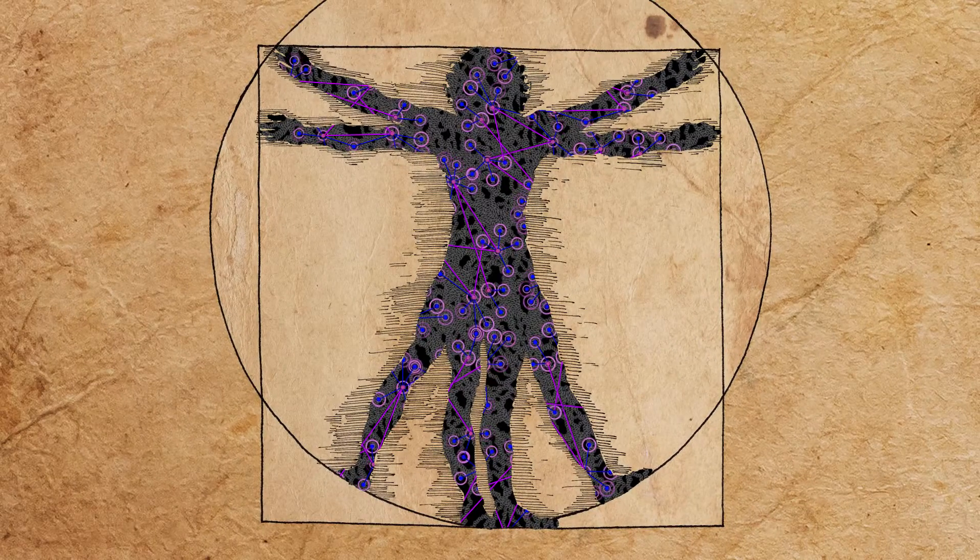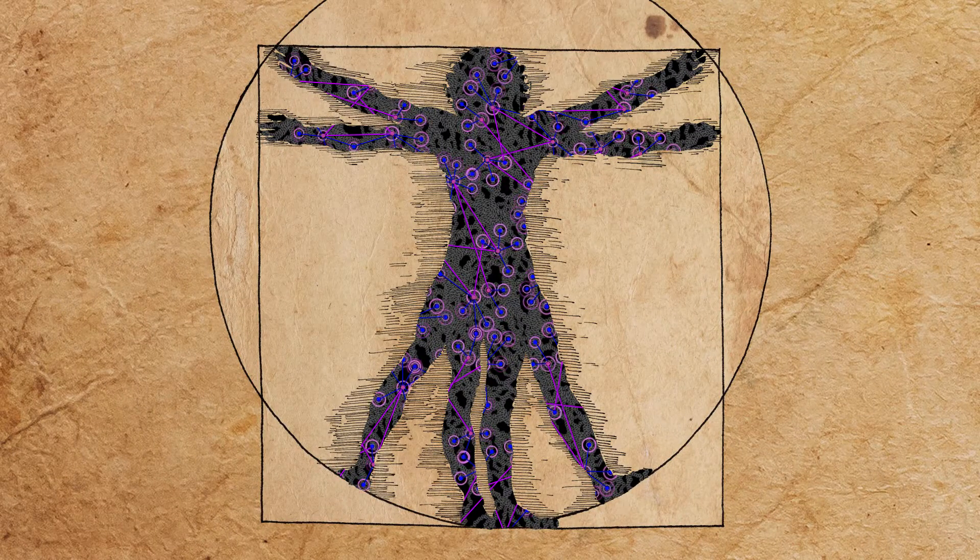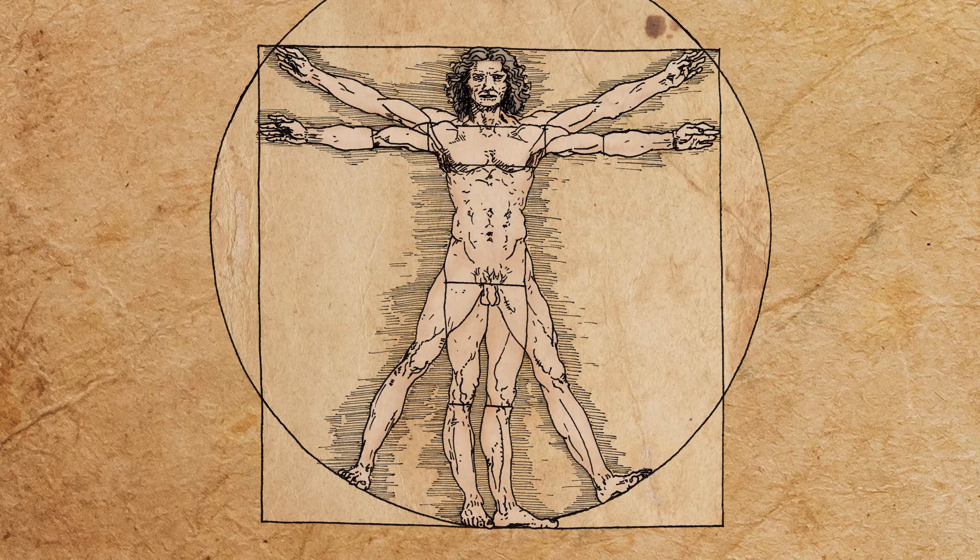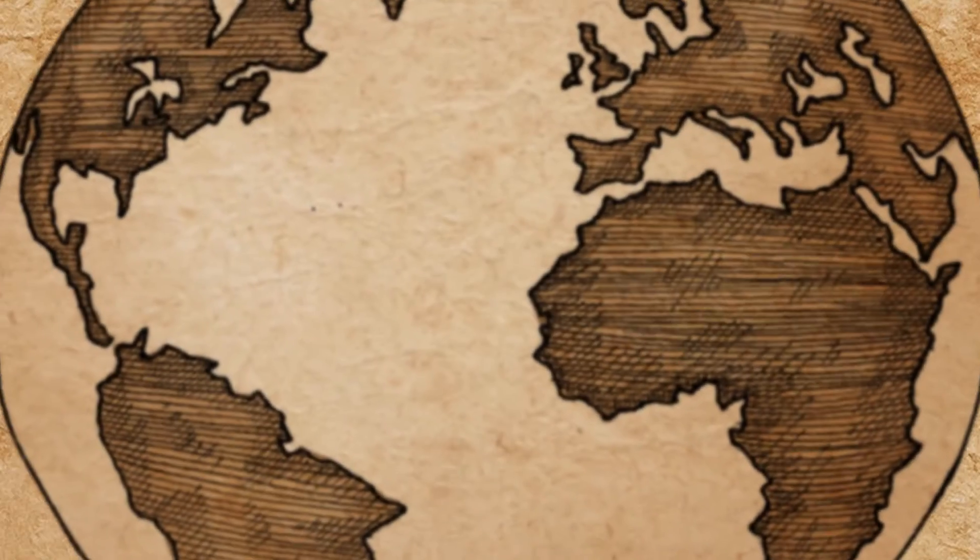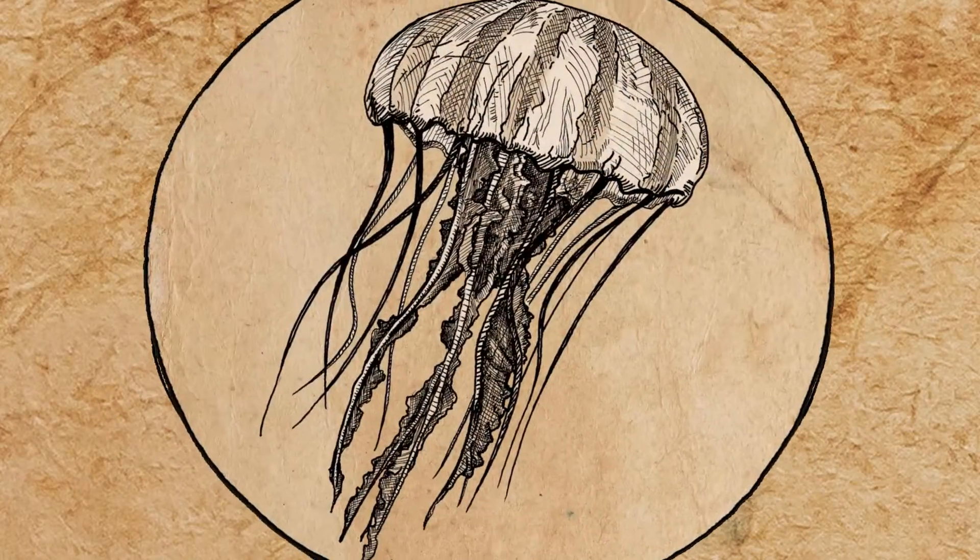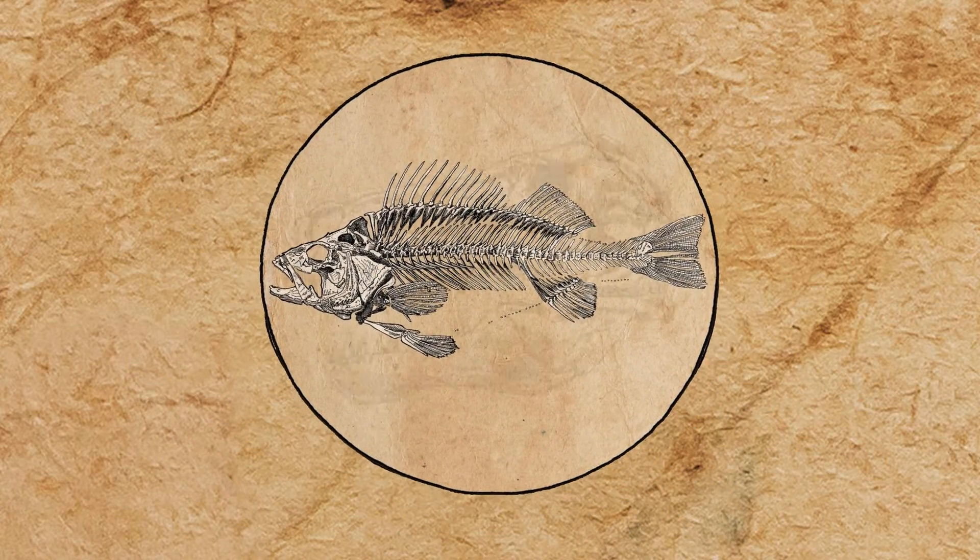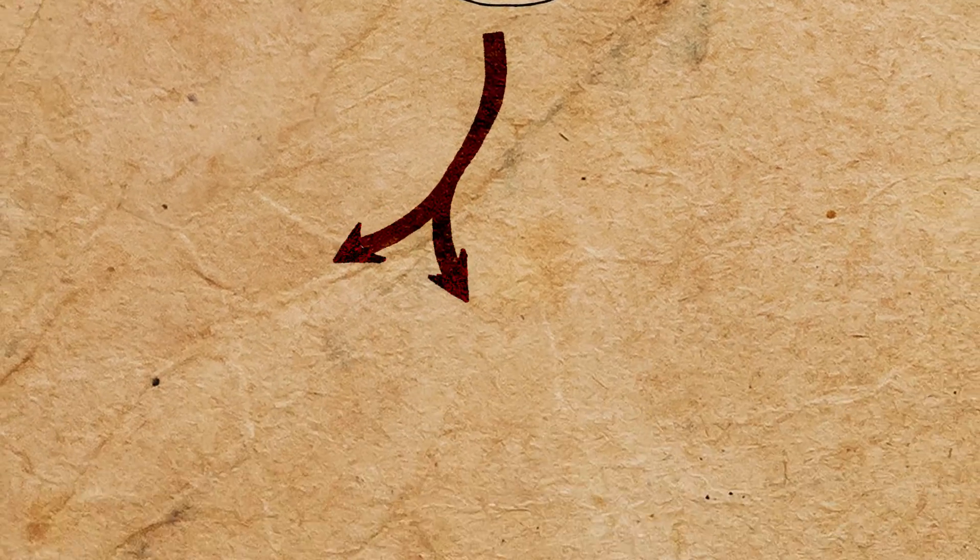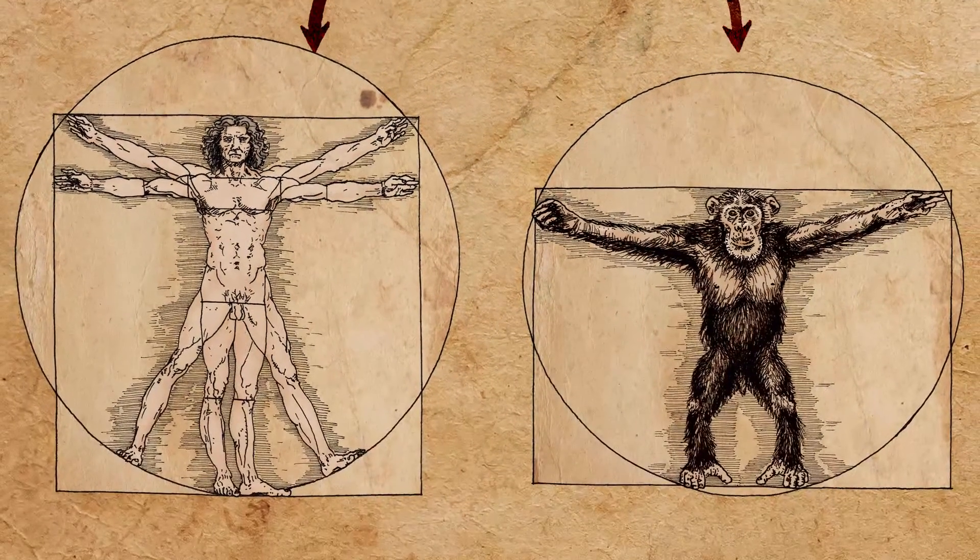Thus, a complex organism is built from a single set of instructions. Through the eons, with mutation, genetic drift, and the dynamic action of jumping transposable elements, common ancestry has evolved distinct species.